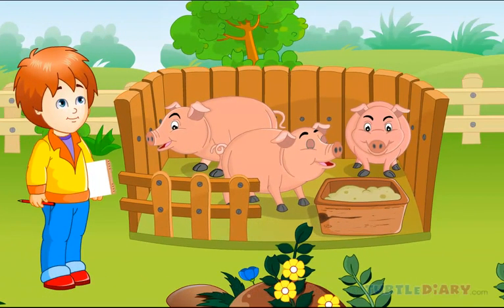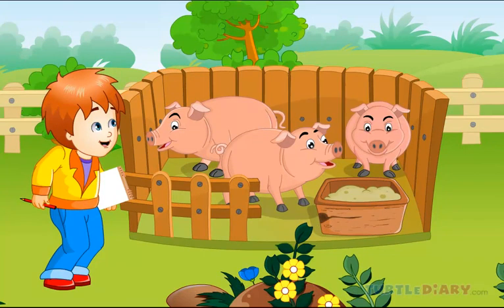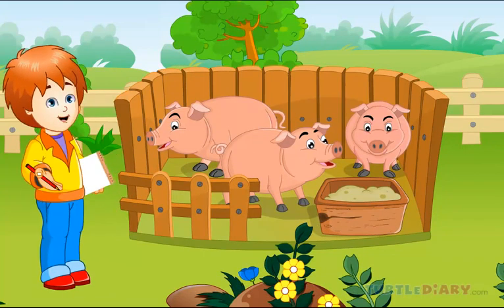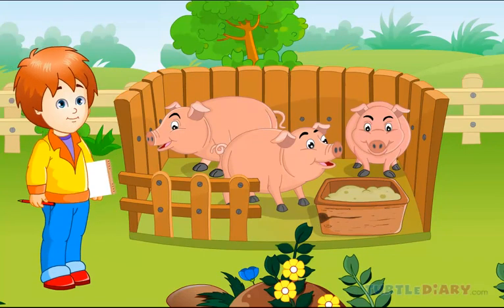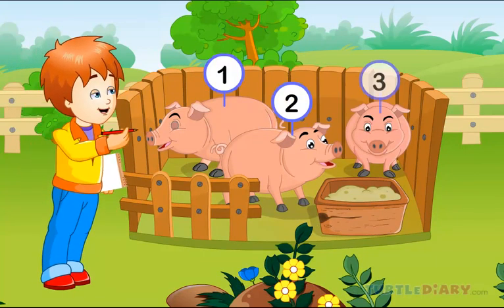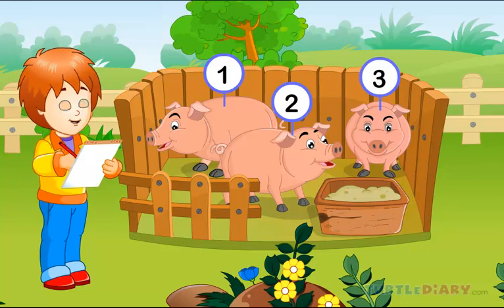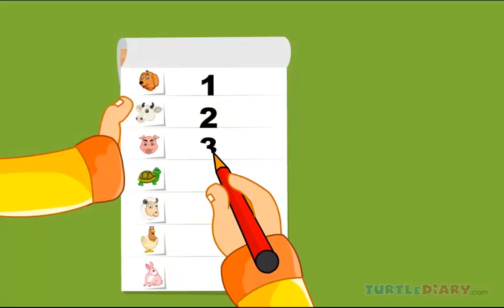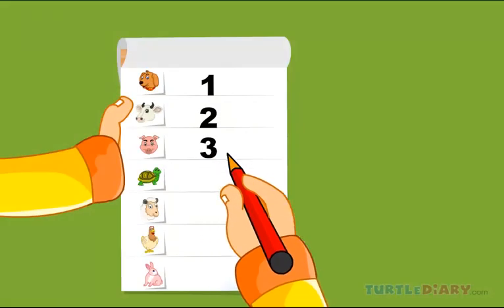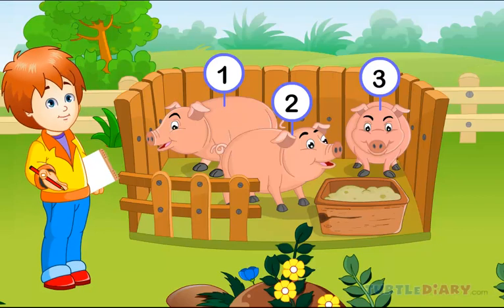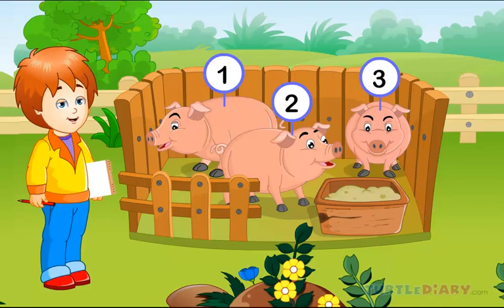Here are some pigs in a stye. Can you count them? One, two and three pigs. Adam has three pigs in his farm. Let's keep going to check the next animal.